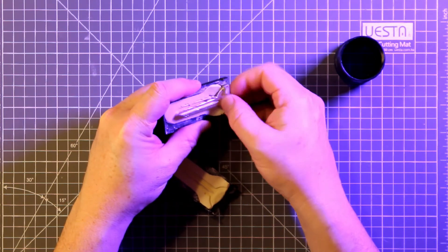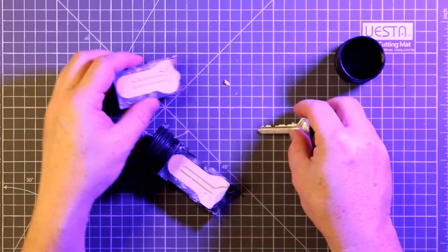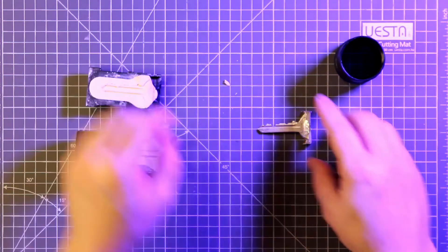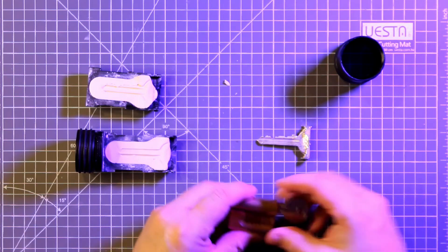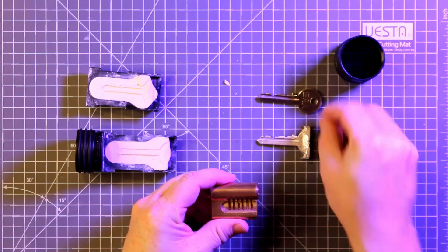There's the key and it looks good. No obvious air bubbles, no flashing. It looks like a success which this process will be nine times out of ten. So let's try it in the lock.